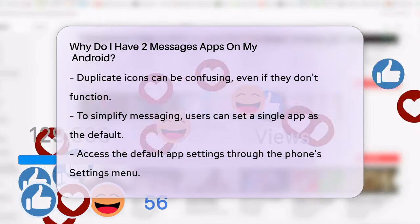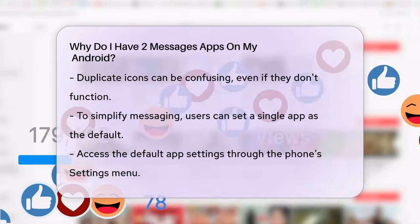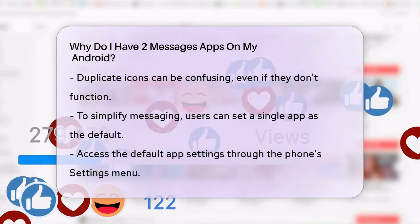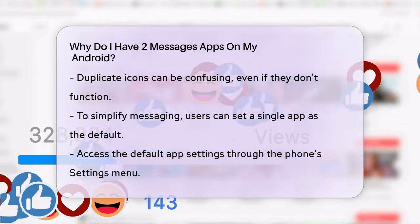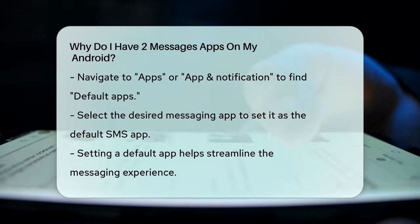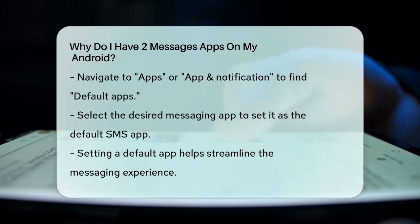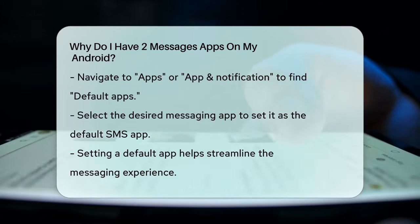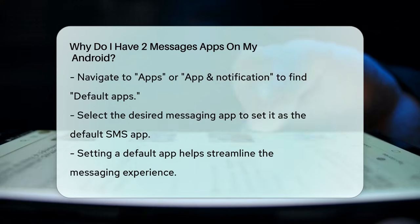To avoid this confusion, you can set a single messaging app as your default. To do this, go to your phone's settings, then tap on Apps or App & Notification, and select Default Apps followed by SMS App. Here you can choose which messaging app you want to use as your default.